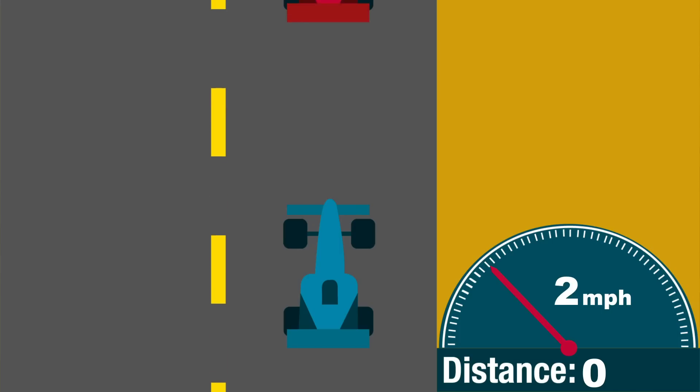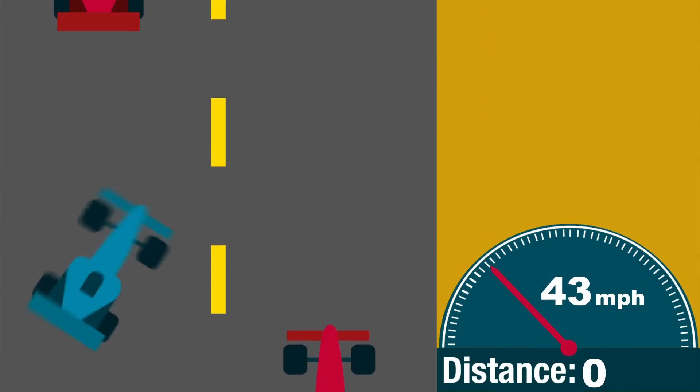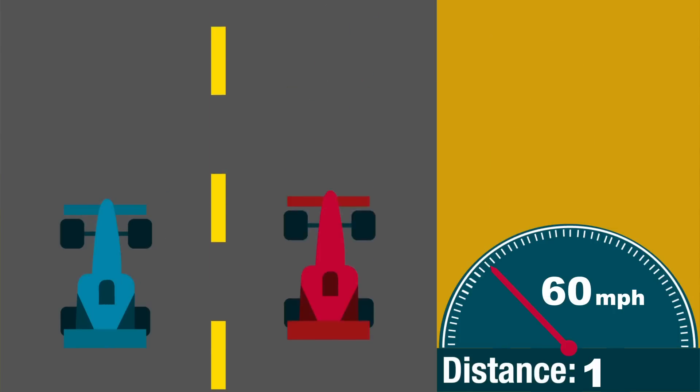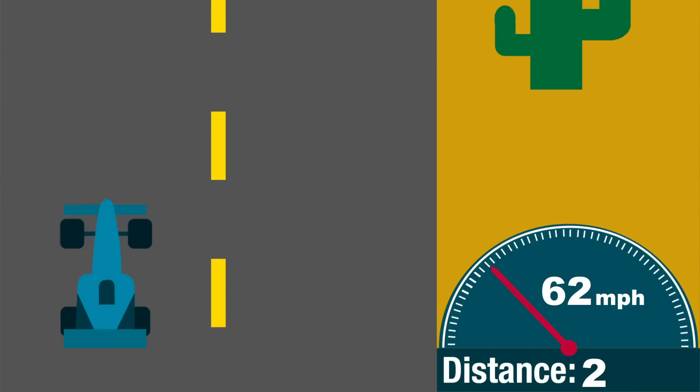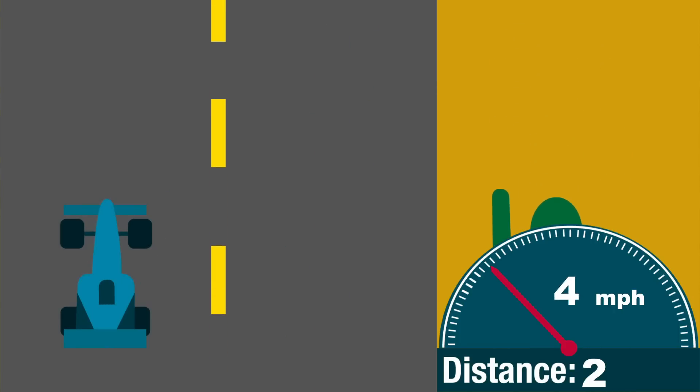We're used to measuring the speed of cars in miles or kilometers per hour, measuring a distance traveled in a set period of time. Acceleration is the measurement of the change of speed over time. Distance and time are easy to measure, so how do we measure the rate of change?